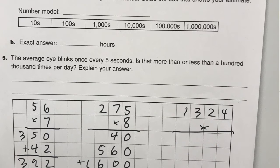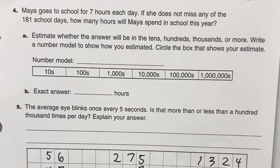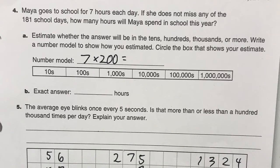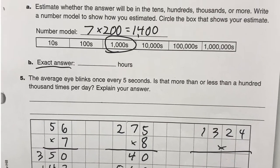There is an estimate here. Maya goes to school for 7 hours each day and doesn't miss any of the 181 school days. How many hours will Maya spend in school this year? You could either round 7 hours to 10, or round 181 to 200. I prefer to do 7 times 200 — 7 hours a day, about 200 days — which is 1,400. And that's in the thousands. For the exact answer, you'd multiply 7 times 181 using partial products — maybe do it on the back if you don't have room.